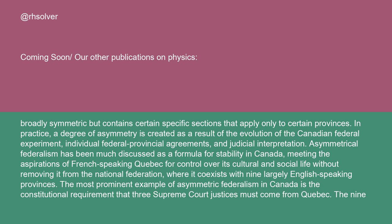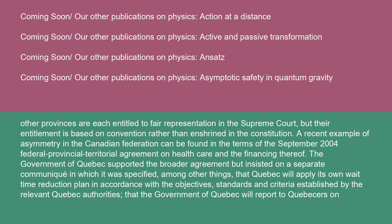The other nine provinces are each entitled to fair representation in the Supreme Court, but their entitlement is based on convention rather than enshrined in the constitution. A recent example of asymmetry in the Canadian federation can be found in the terms of the September 2004 Federal-Provincial-Territorial Agreement on Health Care and the financing thereof.